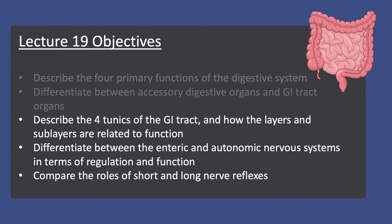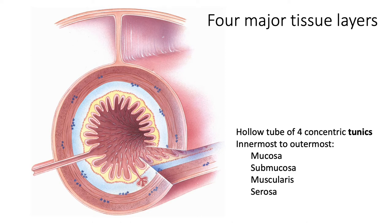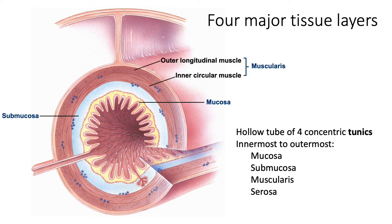Now we'll describe the four tunics of the GI tract and how those layers relate to their function. For the majority of the GI tract, from the esophagus through the large intestine, there are four major tissue layers. From innermost to outermost: the mucosa, which is in contact with the lumen; the submucosa below that; the muscularis, made up of two layers of smooth muscle — inner circular and outer longitudinal; and finally the outer serosal layer.